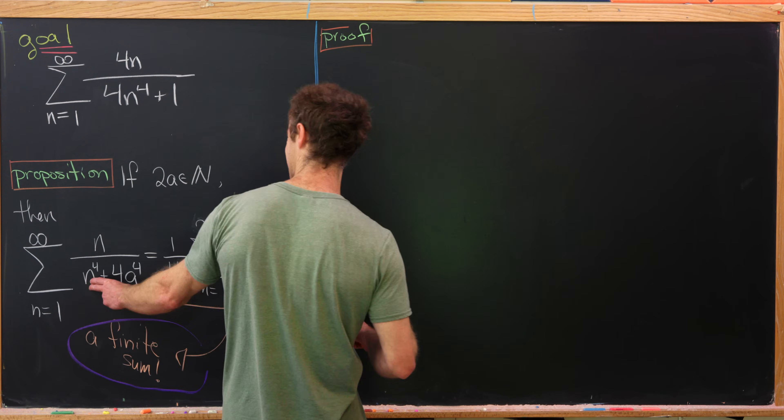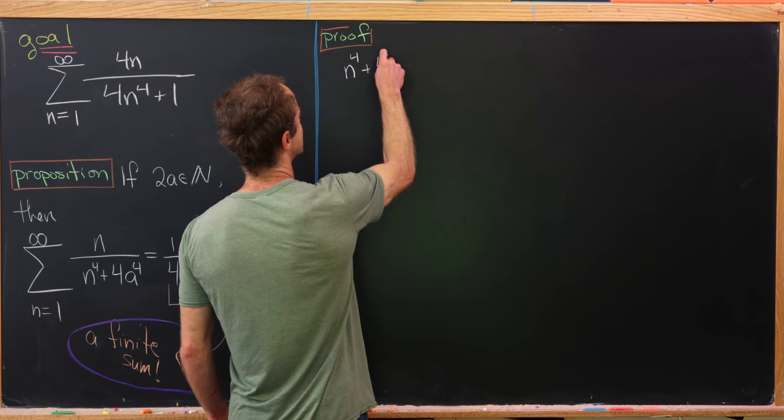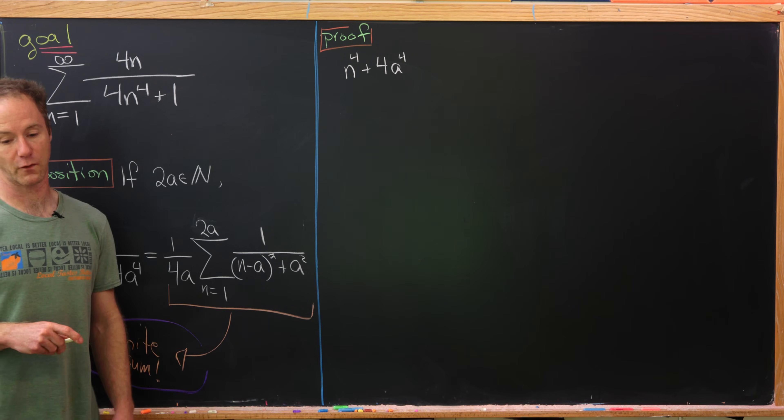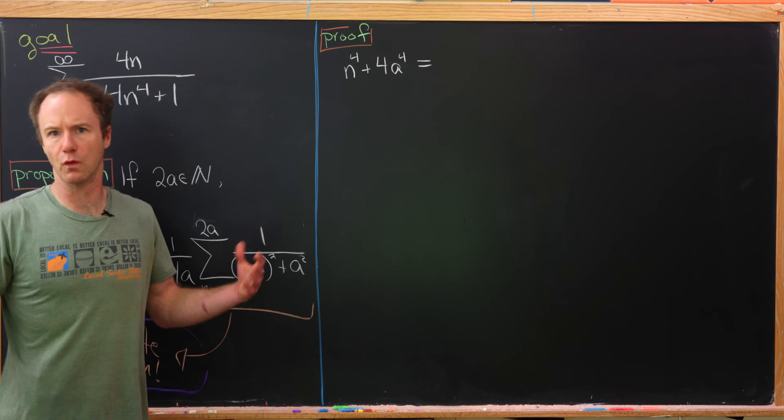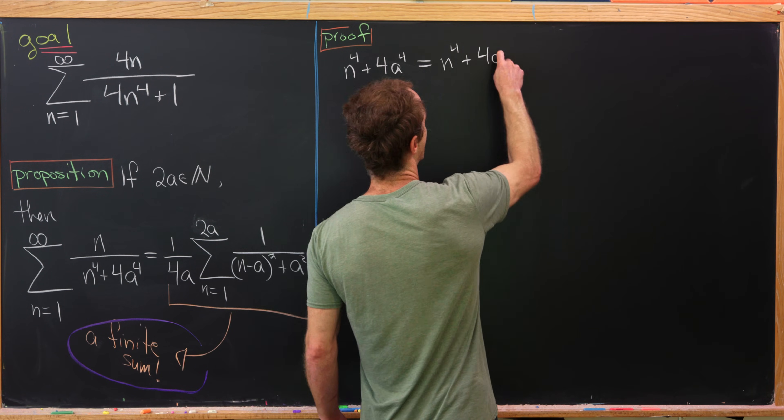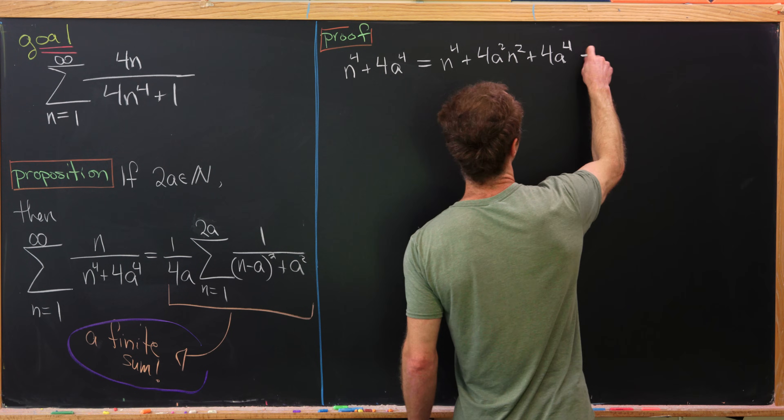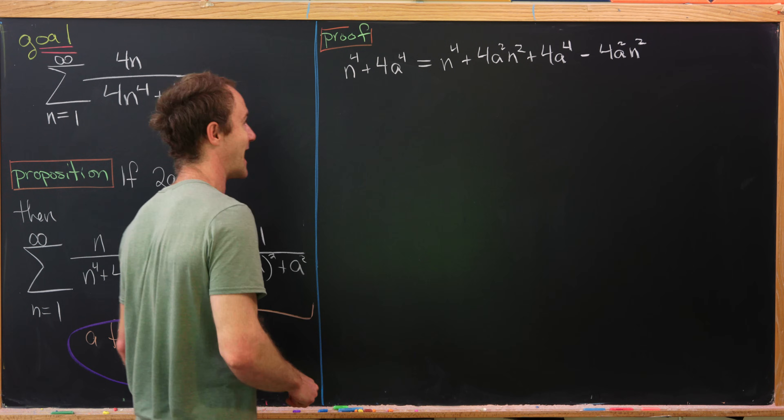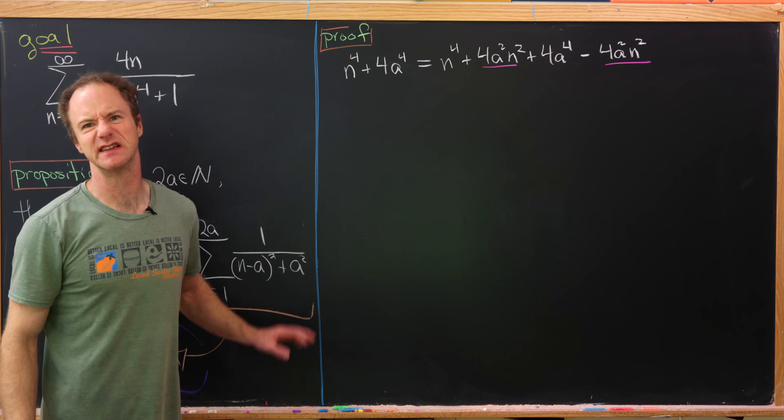So we're going to start off with this denominator and do a little bit of maybe simplification. Well, that's not the right word, but some rewriting of this denominator. So I've got n to the 4th plus 4a to the 4th. And now I'm going to do a mathematician's favorite trick, which is adding 0. It's just what form will that 0 be in? So we'll have n to the 4th plus 4a squared n squared plus 4a to the 4th minus 4a squared n squared. So that's what I did there. I added and I subtracted this 4a squared n squared. So that clearly doesn't do anything.